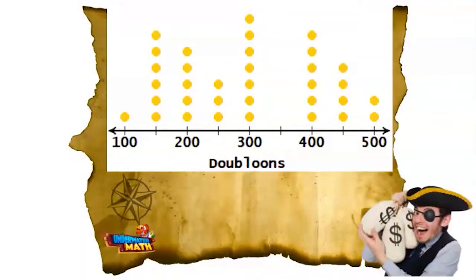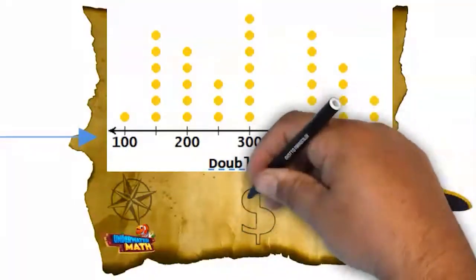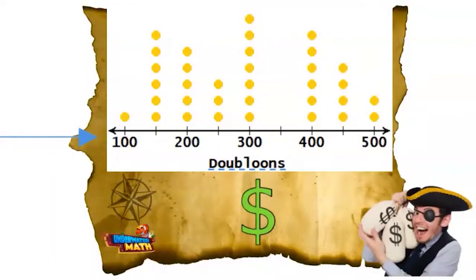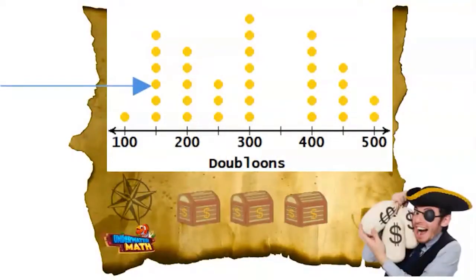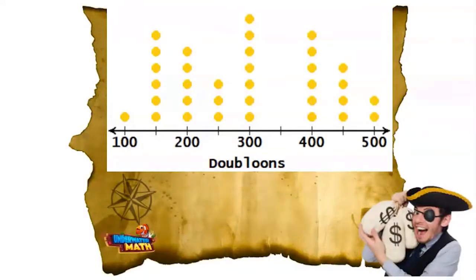You can see there's a number line across the bottom that tells us how many doubloons. Above the number line you see the dots — each of those dots represents one treasure. The number that it is above on the number line tells us how many doubloons that treasure had in it.